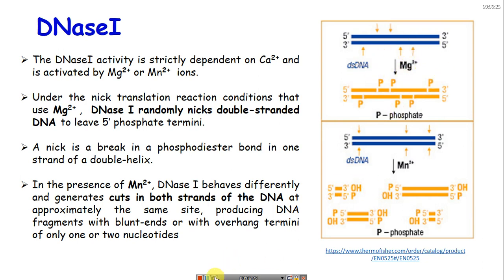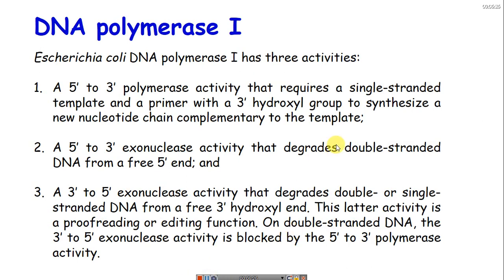We also need to know the activities of DNA polymerase I used in nick translation. It has 5' to 3' polymerase activity, which requires a single-stranded template and a primer with a 3' hydroxyl group — provided by the DNase I activity during nick translation.